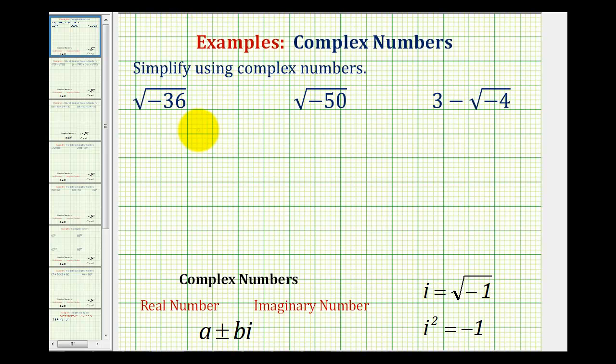We want to simplify the given expressions using complex numbers. For a quick review, complex numbers are numbers in the form of a plus or minus bi, where a is a real number.